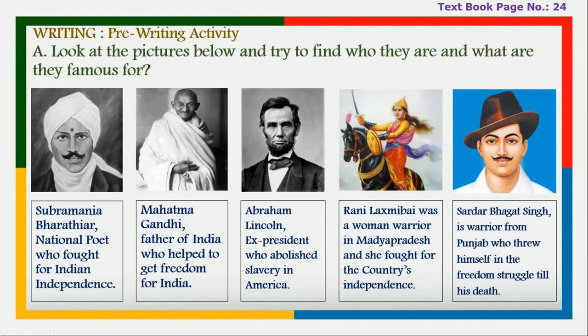Next, textbook page number 24, writing exercise: some famous personalities' pictures are given and we need to write about them. First, Subramania Bharathiyar — national poet who fought for Indian independence. Second, Mahatma Gandhi — father of India who helped gain freedom for India. Third, Abraham Lincoln — ex-president who abolished slavery in America. Fourth, Rani Laxmibai — a woman warrior from Madhya Pradesh who fought for the country's independence.